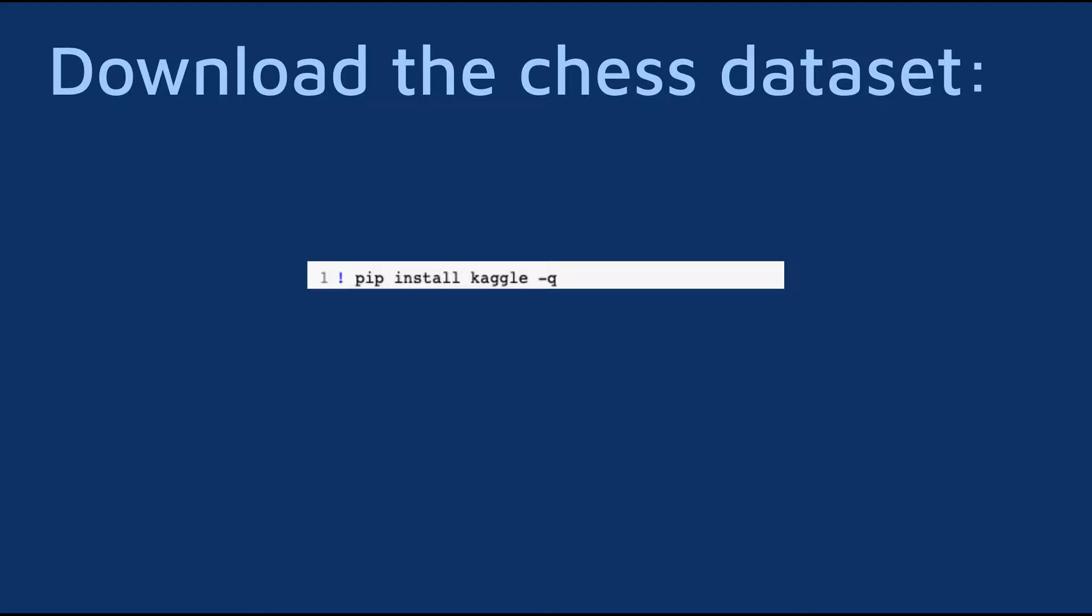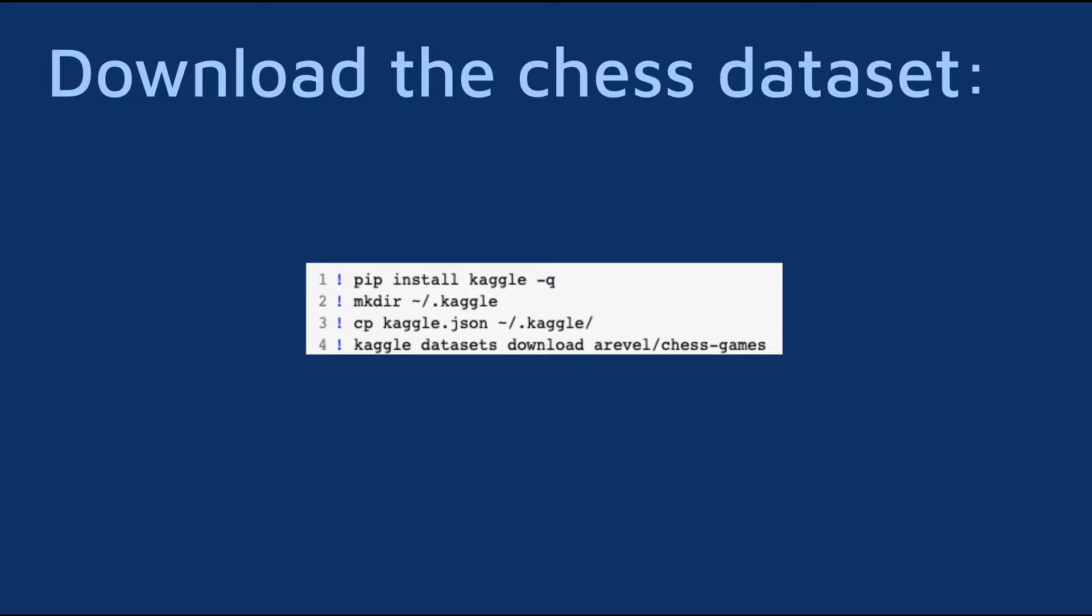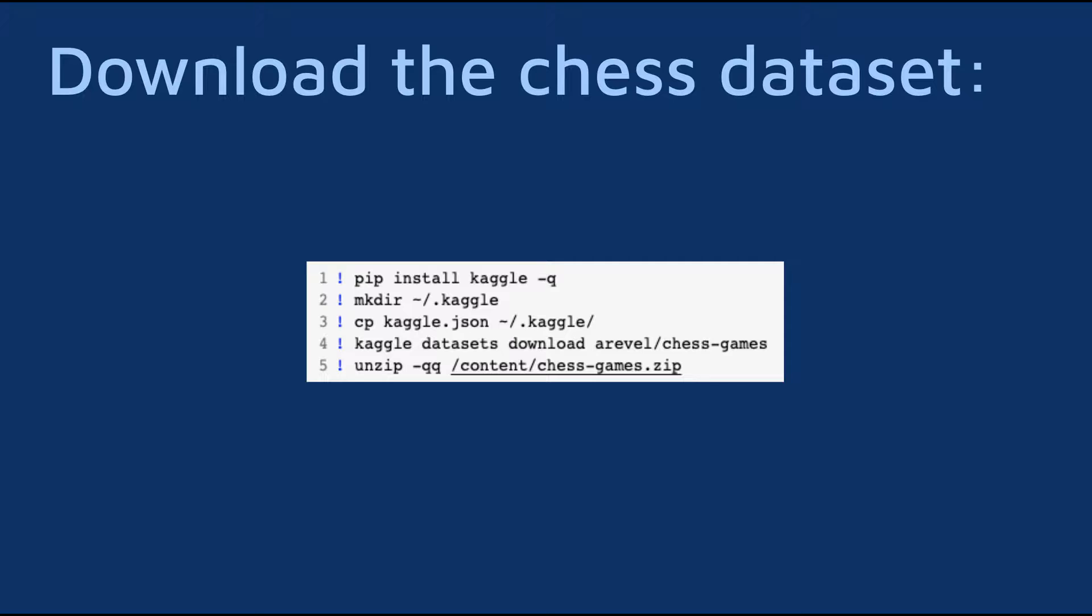First, install the Kaggle package. Now create a folder and copy the json file inside it. Next, download the chess dataset. The name of the dataset is from the URL of the dataset's page on Kaggle, and a link for it is in the description. Lastly, unzip the dataset.